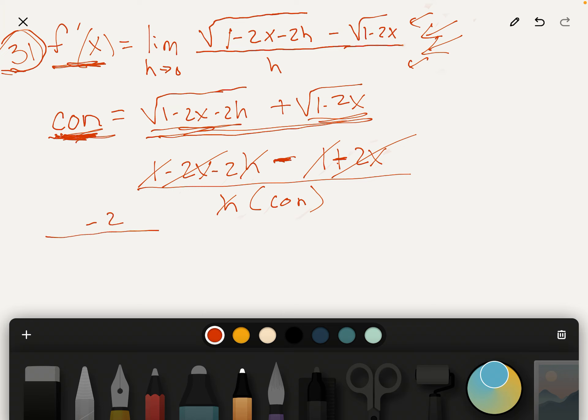Now I'm going to write it out. It's the square root of 1 minus 2x minus 2h plus the square root of 1 minus 2x. But we're taking the limit as h goes to 0. So now we can plug in 0 for h, and we won't,